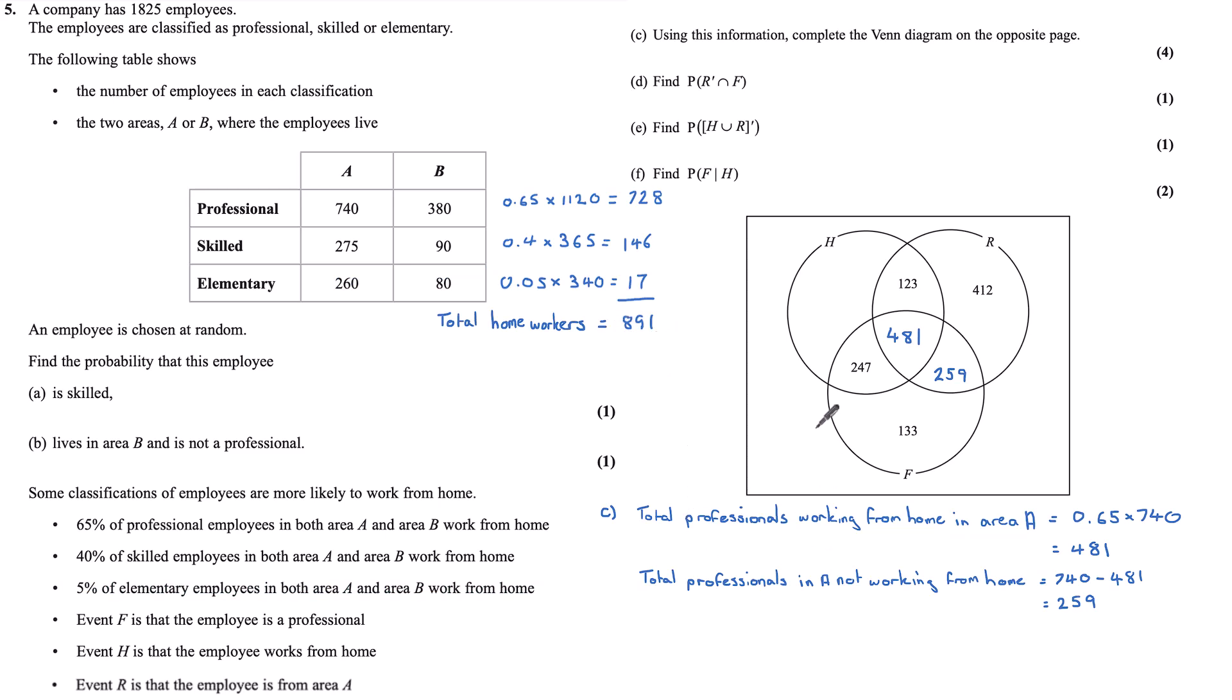And so adding these numbers up, the total number of those working from home should be equal to 891. So to find this value here, if I do 891 subtract these values, I get an answer of 40. So the last part 2 number is the square. All of these numbers should add up to 1,825. So 1,825 subtract all the numbers in these circles leaves me with 130 employees.